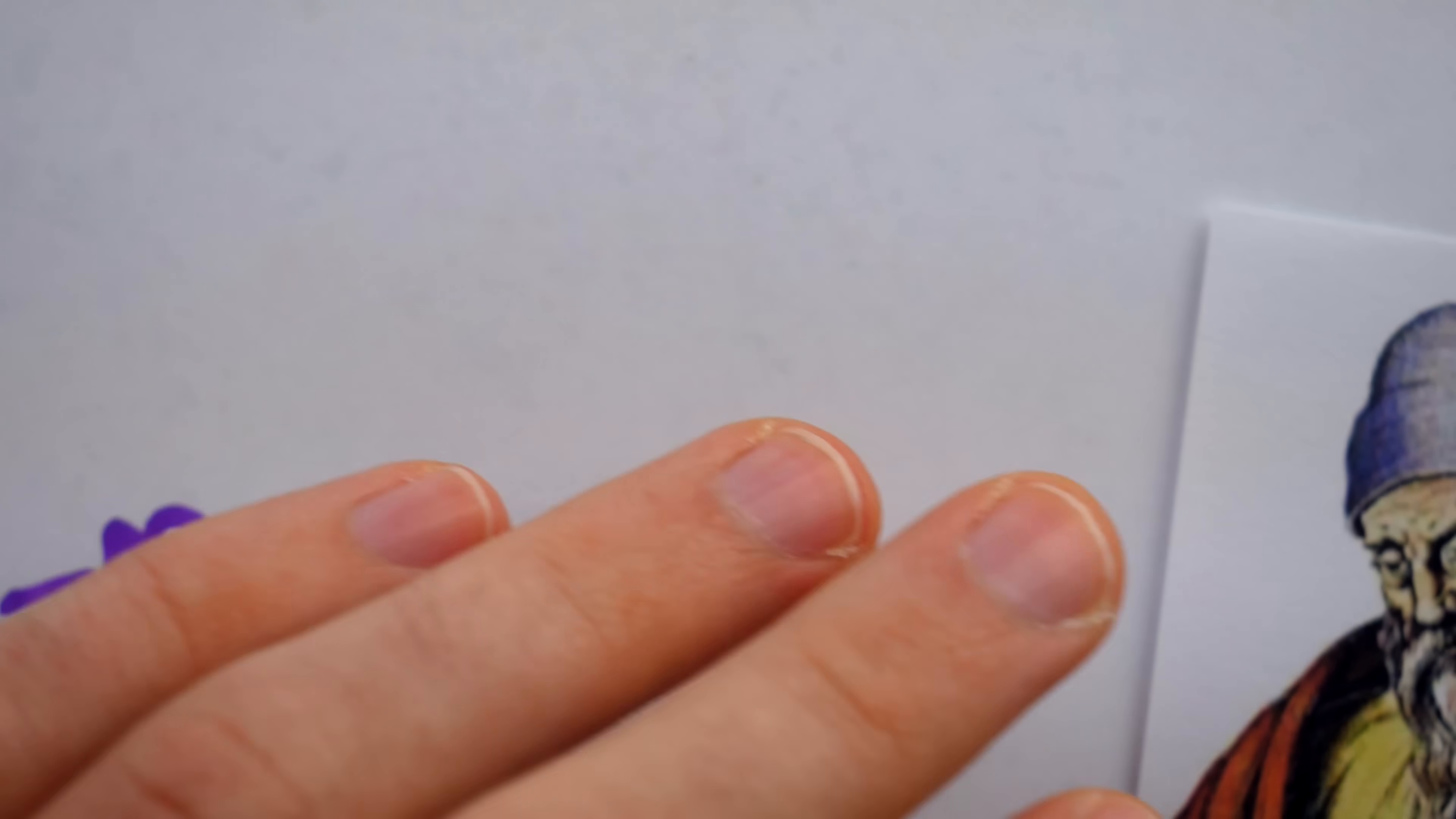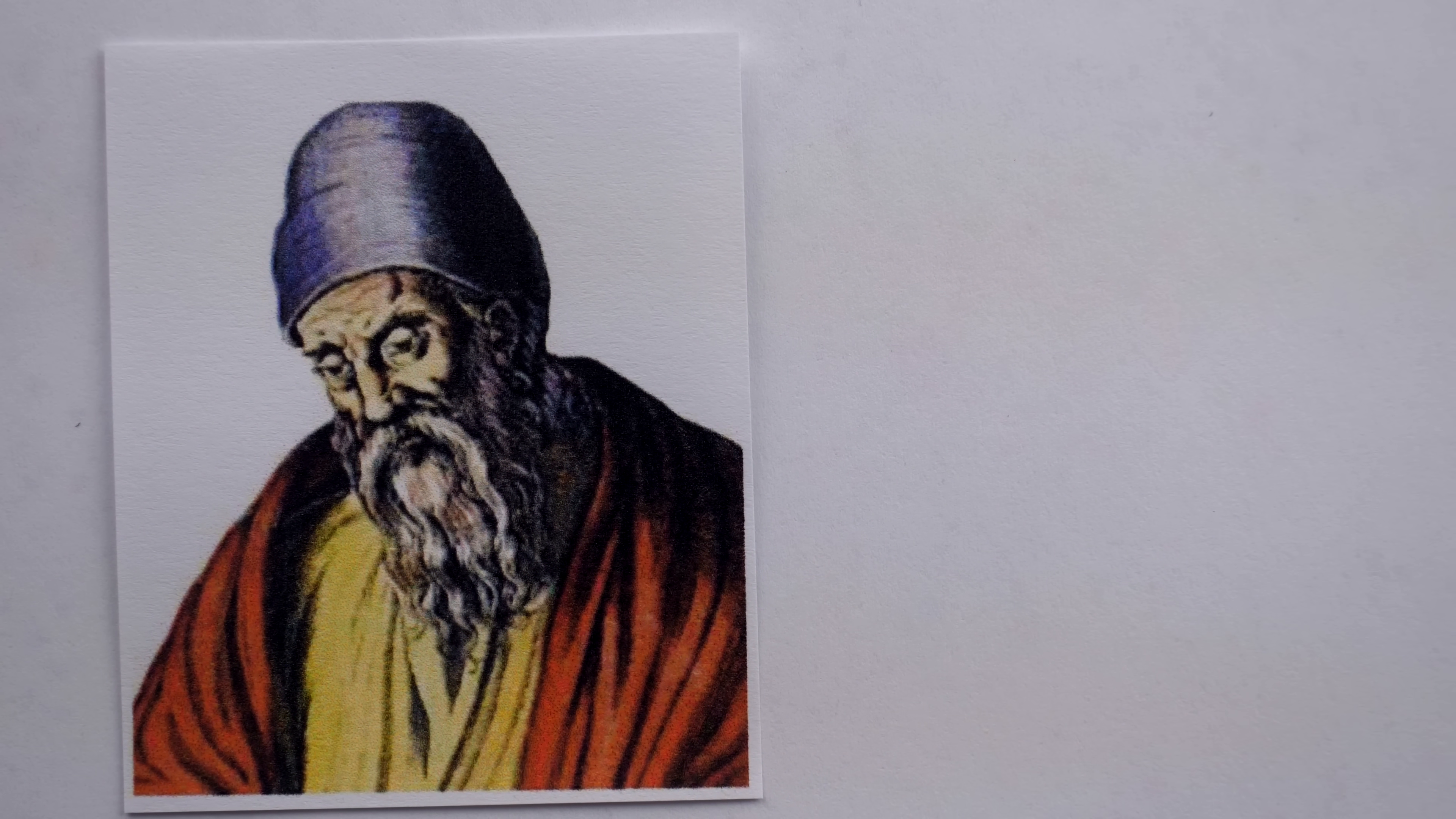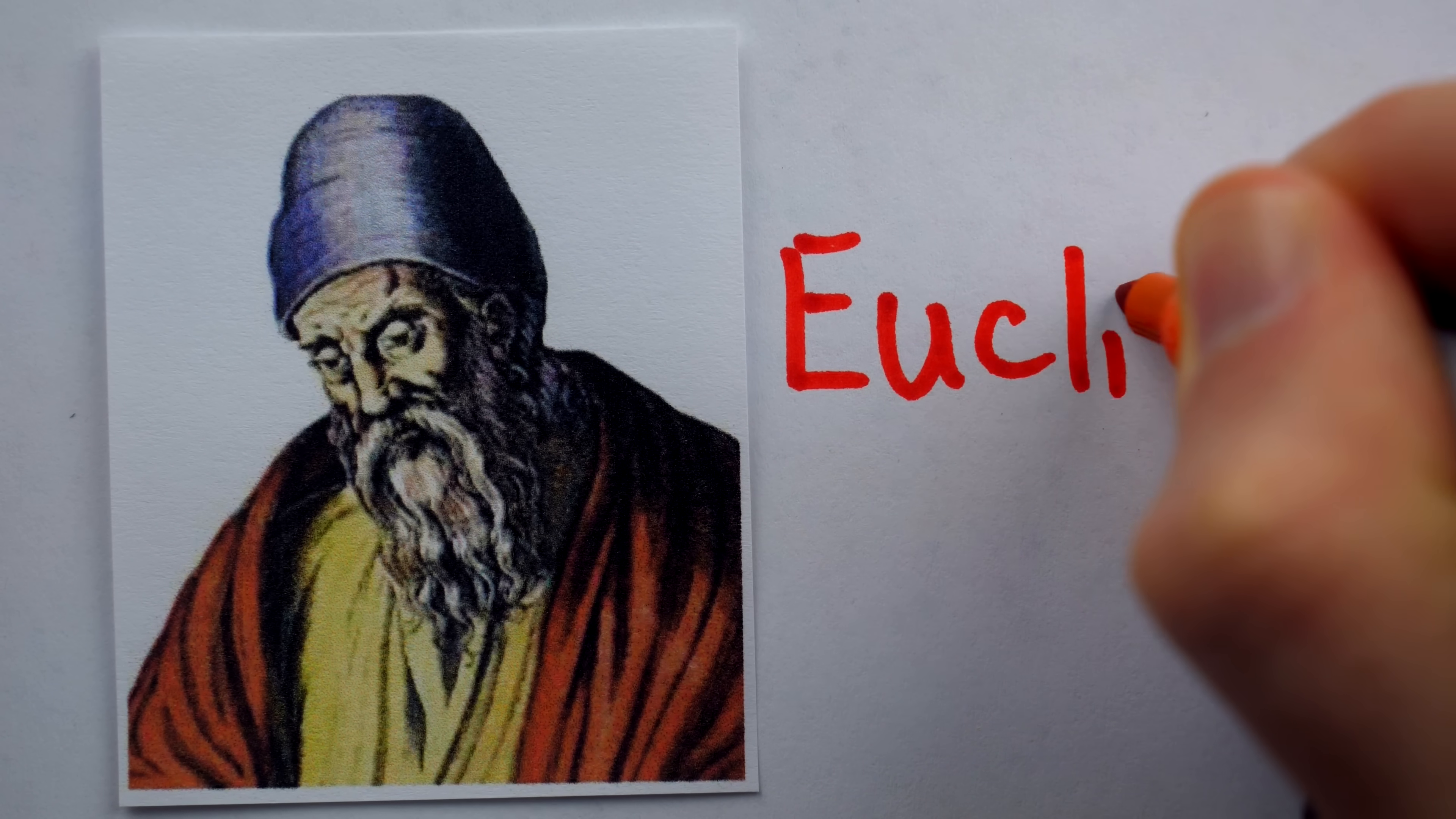This most urgent matter was settled around 2,300 years ago, circa 300 BC, by the famous ancient Greek mathematician who didn't have a cult, Euclid.